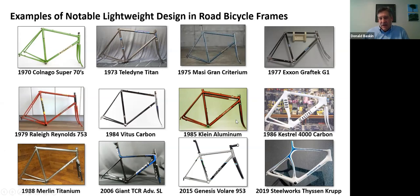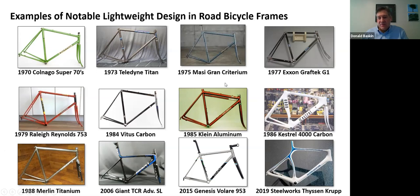In 1985, Gary Klein — an MIT graduate — started a bicycle company using aluminum. He understood mechanical properties well and had the idea of using big-diameter aluminum tubes. Since the tubes are under bending, using larger diameter allows for great weight savings with aluminum — a lower specific stiffness than steel, but you can use that to your advantage in a bending-dominated design. These bikes were a bit lighter than steel — maybe a pound or two — and had their characteristic chunky look. Cannondale later copied this concept.